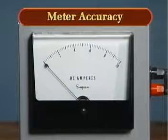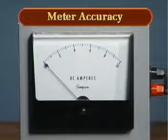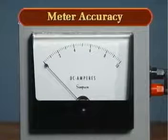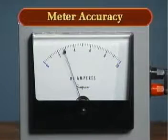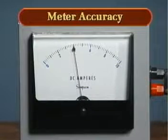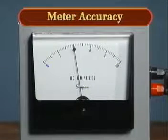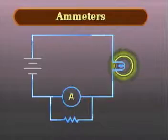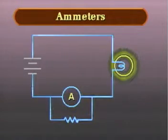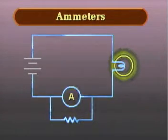Next, we compared how to calculate the accuracy of analog meters with how to determine digital meter accuracy. Finally, we saw how to connect an ammeter in an actual circuit in order to measure current.